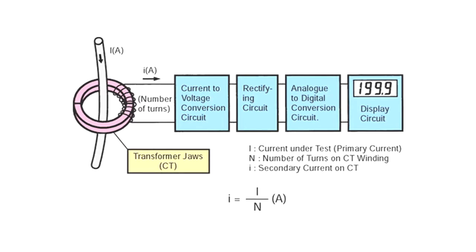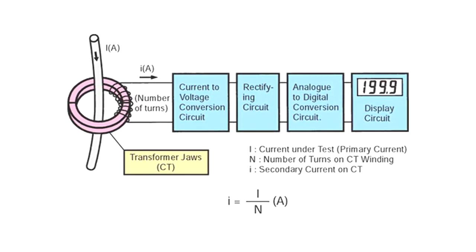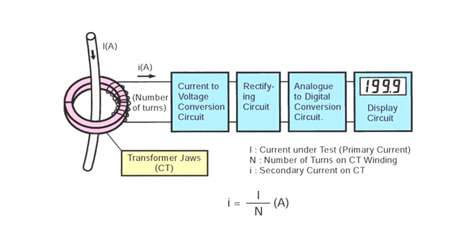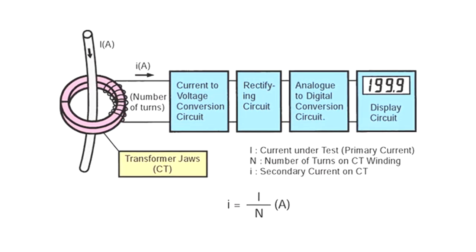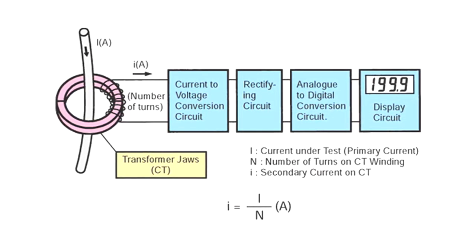AC clamp meters use the principle of a current transformer. The wire that is being held by the jaws of the current clamp can be seen as the primary current of the transformer.